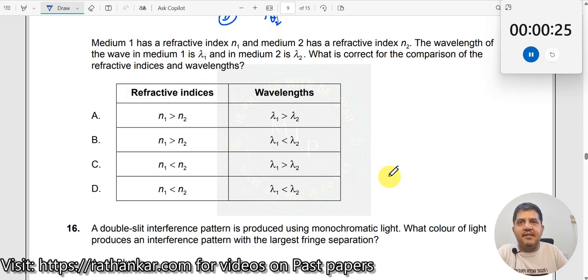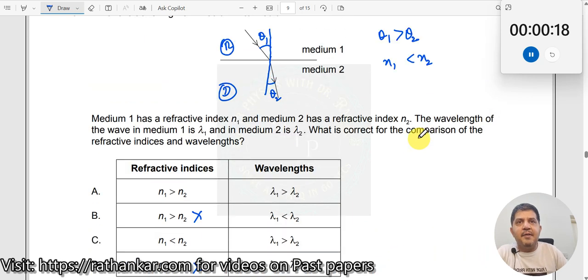What is the correct comparison? So I said n1 less than n2. These two are incorrect and what will happen to the speed?